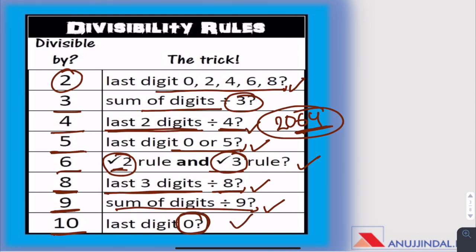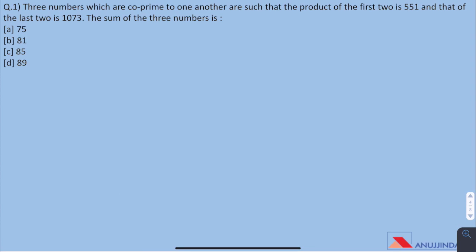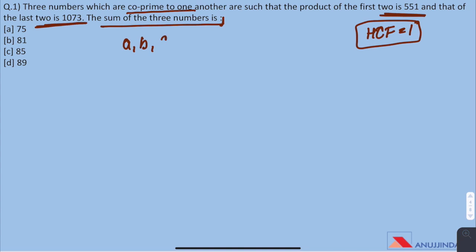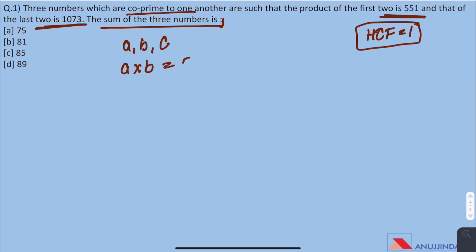Now let us solve some questions. Question 1: Three numbers which are co-prime to one another are such that the product of first two is 551 and that of last two is 1073. The sum of three numbers is... In the question it is given that these numbers are co-prime which means their HCF is 1. Let the numbers be A, B and C respectively. According to question, A multiplied by B equals 551 and B multiplied by C equals 1073.